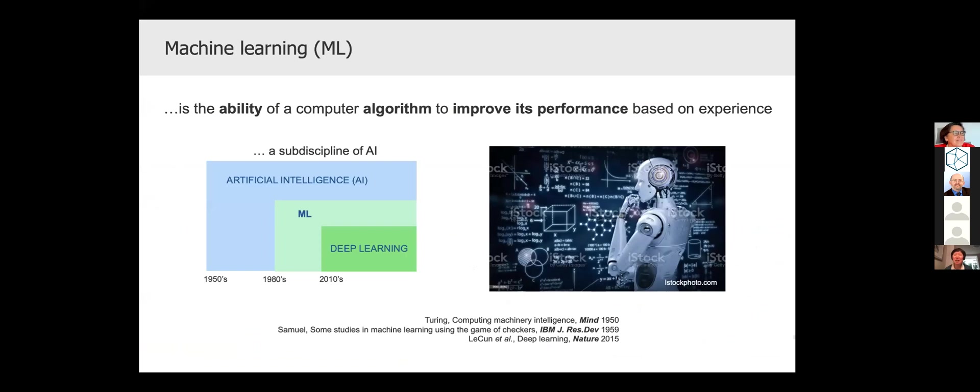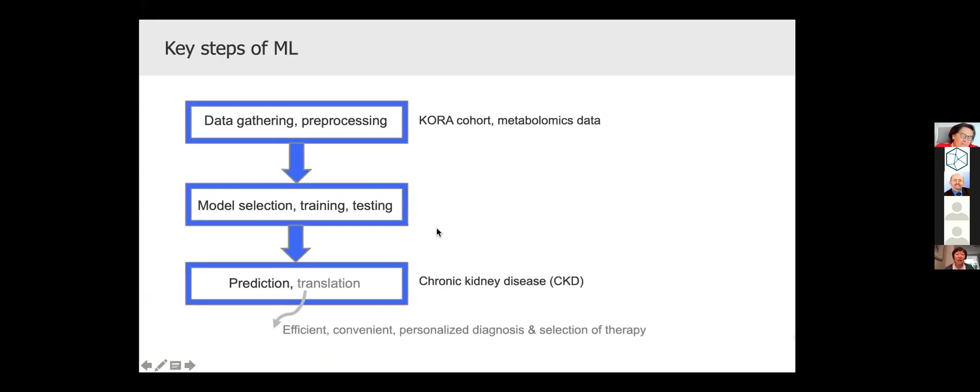Generally speaking, we are talking about the ability of an algorithm to improve its performance. So machine learning is a sub-discipline of AI, which was introduced about 70 years ago. Machine learning starts with data gathering. It is a saying garbage in, garbage out. This means high quality, good data is the basis for machine learning, for predictive modeling.